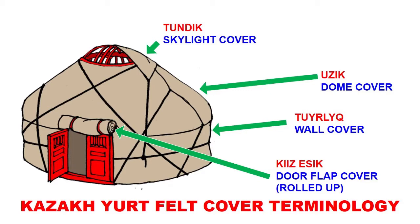Tunduk means night cover because it was predominantly covered at night time. Interestingly, the Kyrgyz refer to the skylight itself as tunduk. So there are these little variations between very closely related Turkic-speaking peoples.